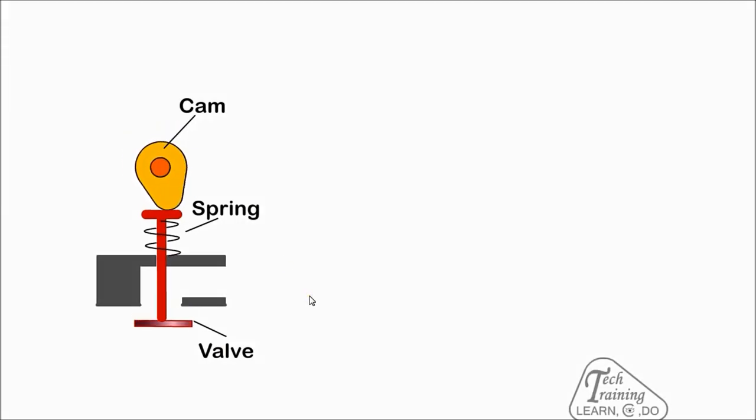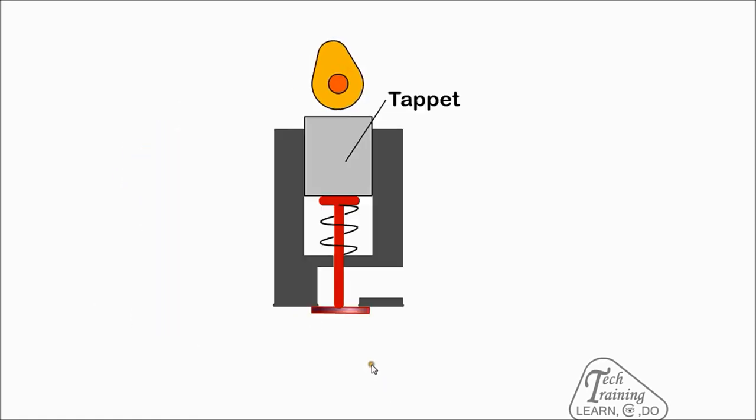A camshaft can operate the valve directly, or usually a cam follower or tappet is used between the cam and the valve. Sometimes the camshaft lobe is offset from the center of the valve and tappet to encourage the tappet and valve to rotate as it is pushed down.